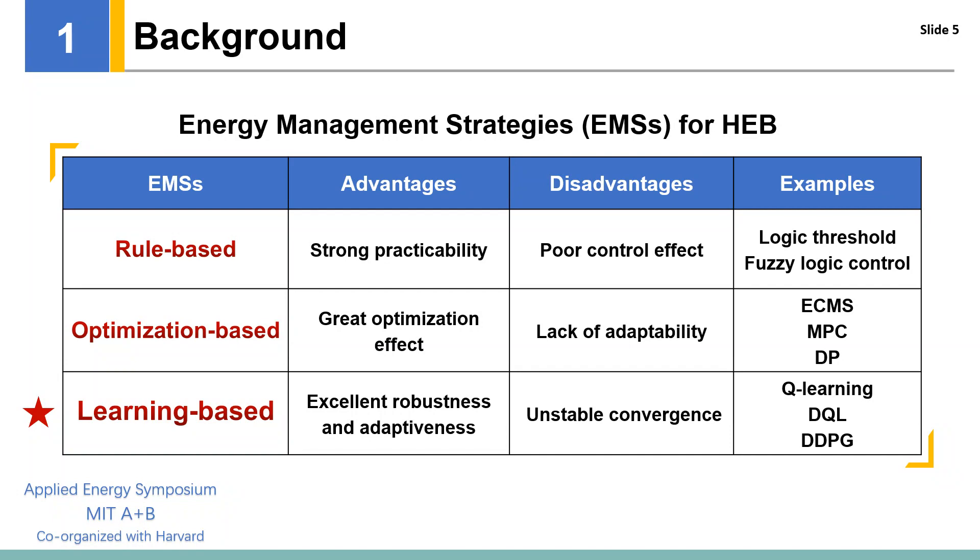Among the three kinds of strategies, the learning-based strategies, especially reinforcement learning, such as Q-learning, deep Q-learning, and the deep deterministic policy gradient, have attracted a lot of research attention in recent years, thanks to the model-free attributes, excellent robustness, and great adaptability.